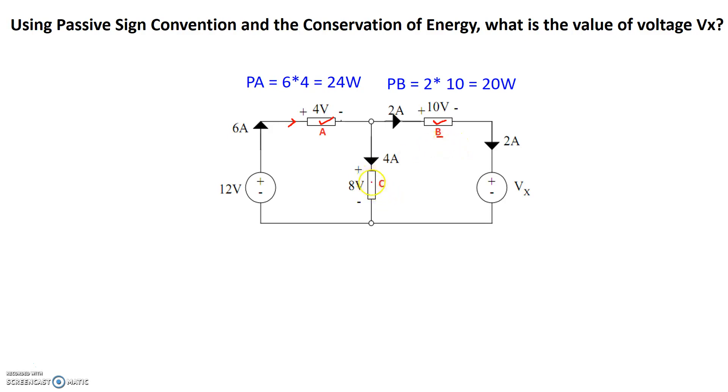Take a look at element C. Again, current is flowing into the positive side, so this does follow passive sign convention as well. So 4 amps coming in, 8 volts across the element, so 8 times 4 is 32 watts. So that's a total of 32 watts right there.